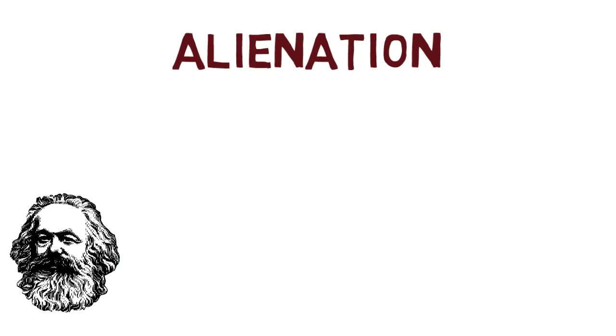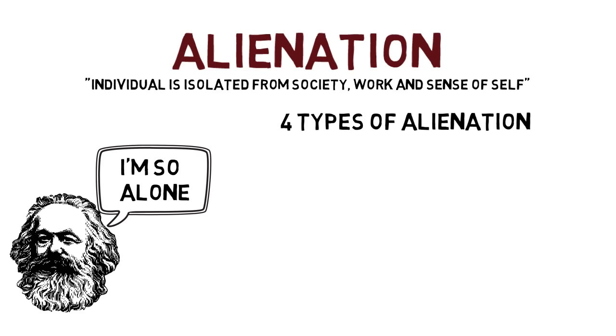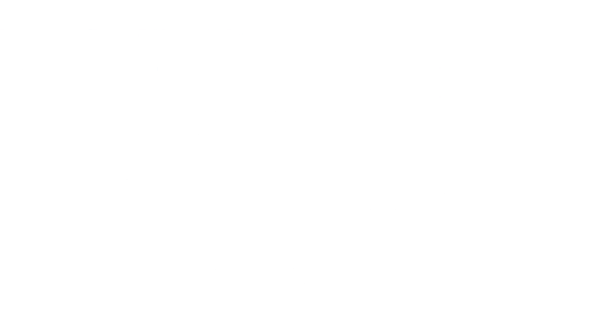Under capitalism, the proletariat experienced what Marx called alienation. Alienation is the condition in which the individual is isolated from society, work, and the sense of self. Let's explore the four different types of alienation Marx discussed.